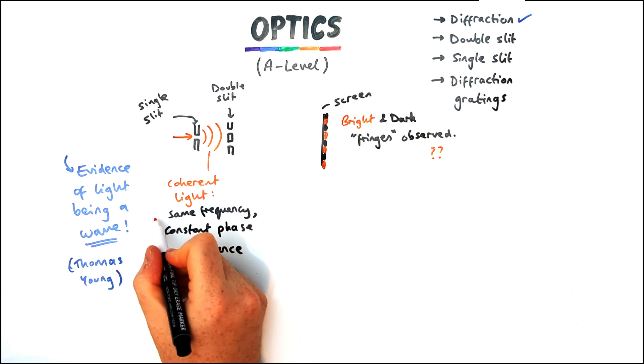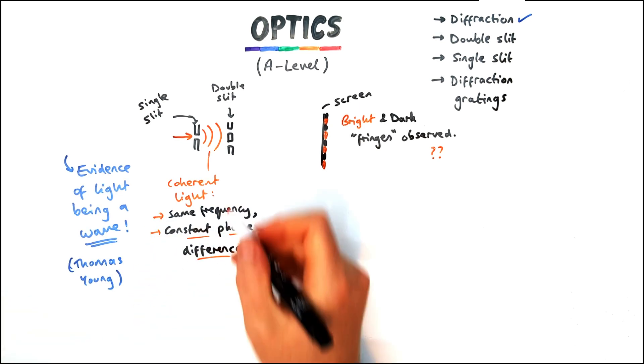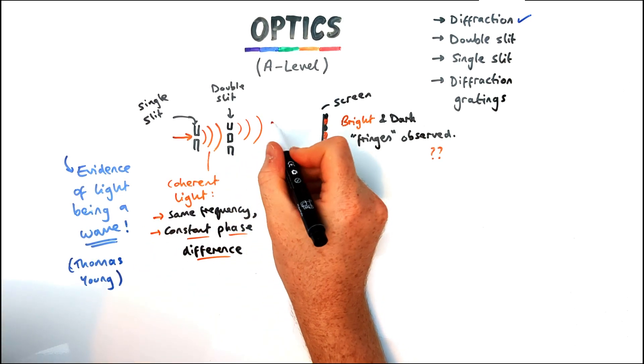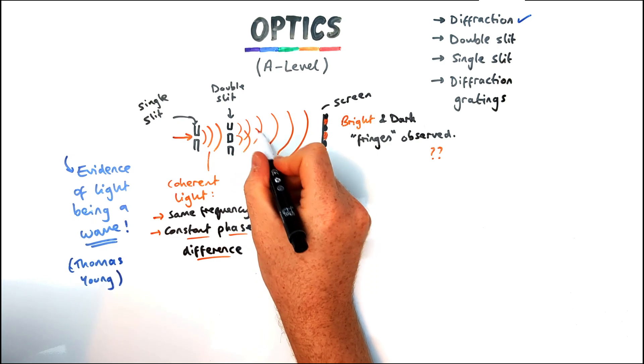Now when it travels through a double slit the waves will overlap and when they reach the screen an effect known as superposition happens. Now this can lead to one of two things.